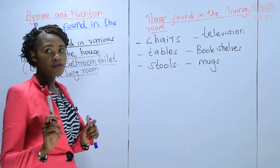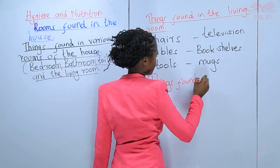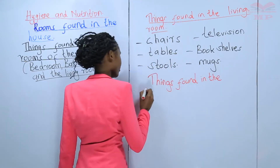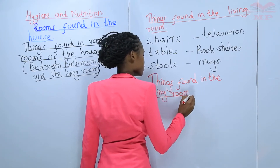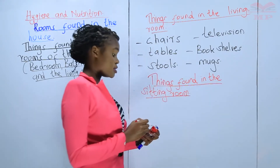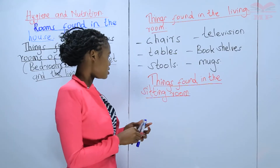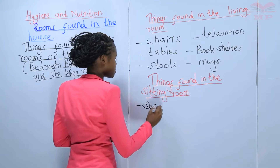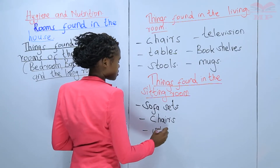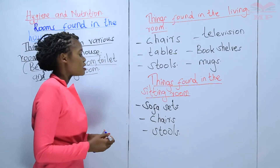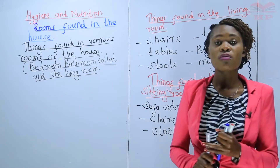Then we discussed about things found in the sitting room. A sitting room is a place where we rest after a long day of activities. What are some of the things found in the sitting room? We have sofa sets, chairs, and stools. So this is what we discussed in our previous lesson — the things found in the living room, sitting room, and the kitchen.